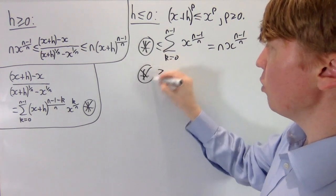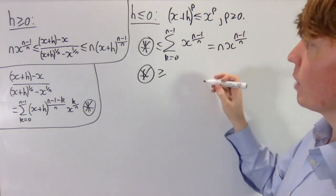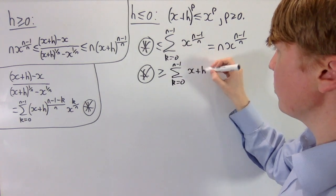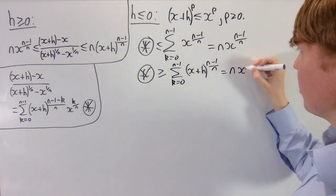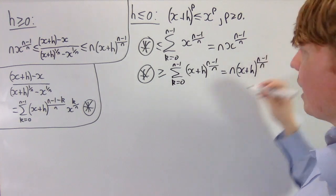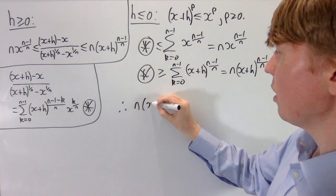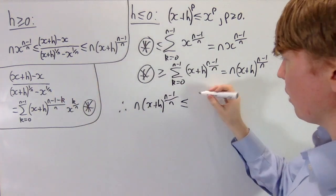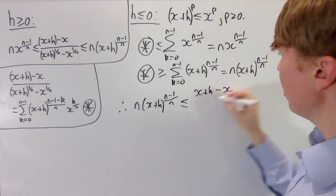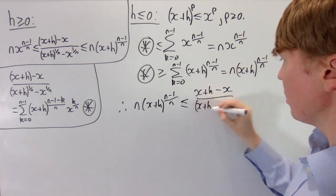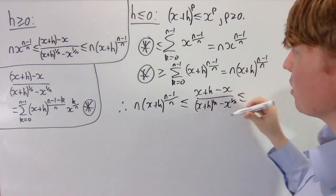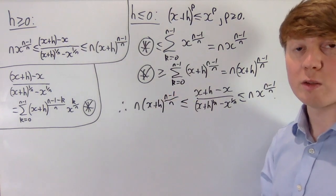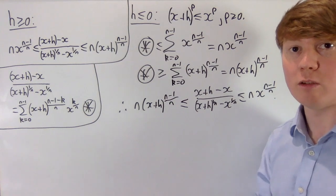Similarly, for our lower bound, we know that all of our x terms are bounded from below by x plus h. With the cancellation of the powers of k, you end up with x plus h to the n minus 1 over n, giving us n copies of x plus h to the n minus 1 over n. So we can conclude that with the lower bound of n times x plus h to the n minus 1 over n, this is less than or equal to the quantity we're interested in — x plus h to the 1 over n minus x to the 1 over n — and it's bounded from above by n times x to the n minus 1 over n. Now we're ready, in each case where h is positive or negative, to take limits to evaluate the right and left derivatives.